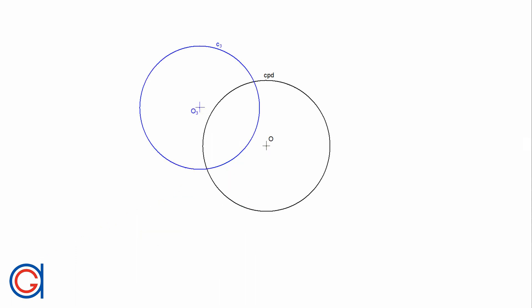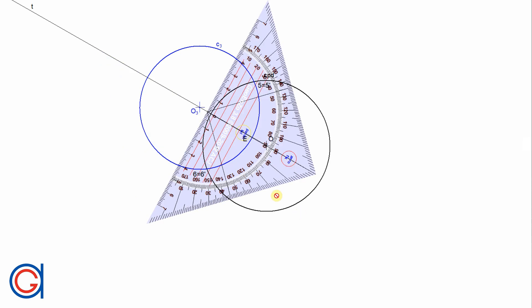Let's continue with circle number 3, circumference C3, which intersects the reference circle at two points 5 and 6, and whose circumference doesn't pass through the origin O. The inverse circle C3 prime also intersects the reference circle at the same points 5 and 6, with center point O3 prime on the elongation of line segment O-O3. The first step is to join origins O and O3 and elongate it — we call this line T. Line T intersects circumference C3 at a new point E, highlighted in red. The next step is to work out the inverse point of E.